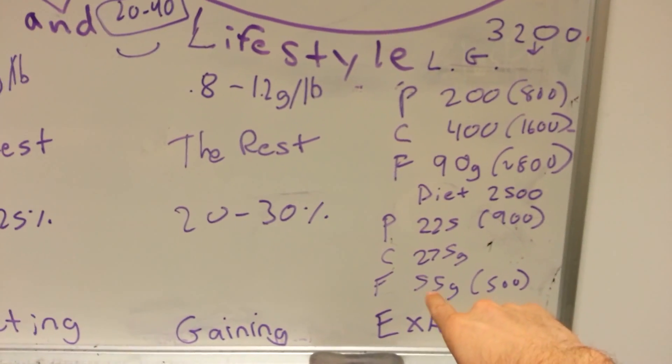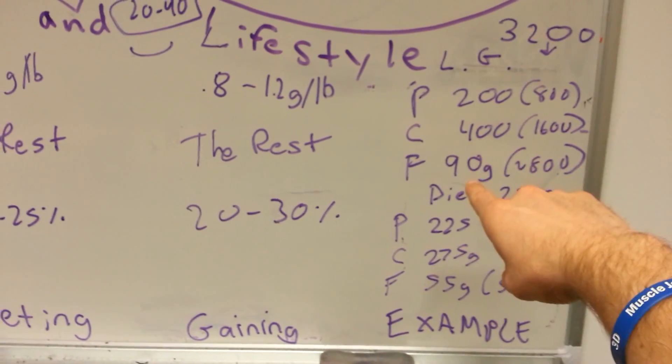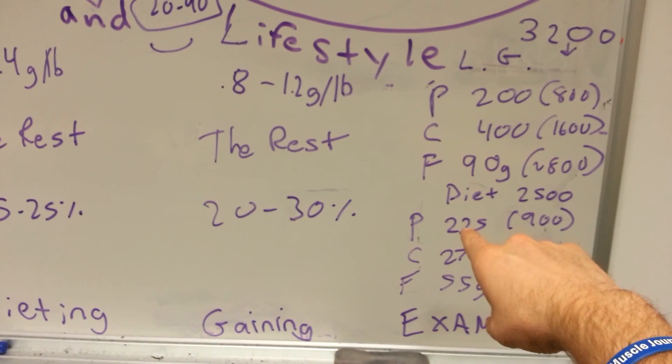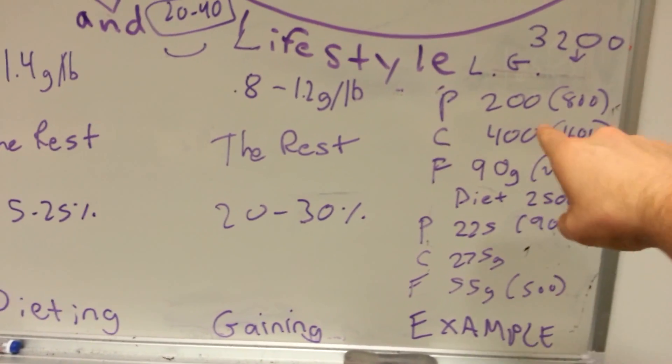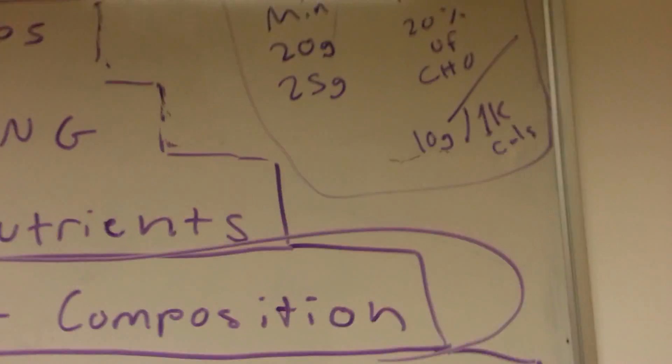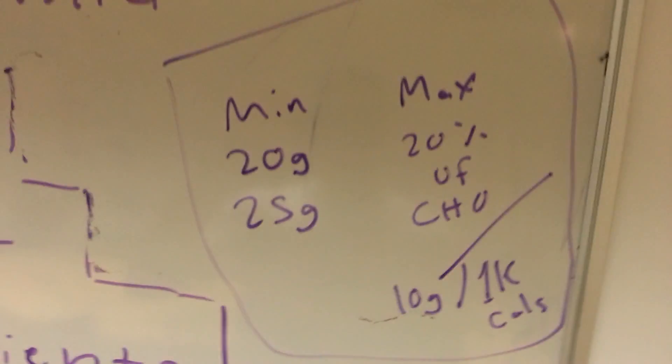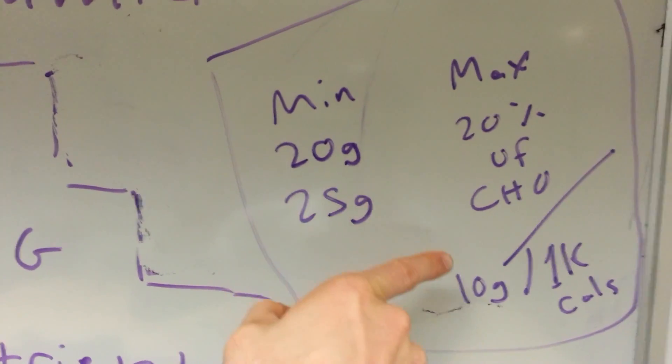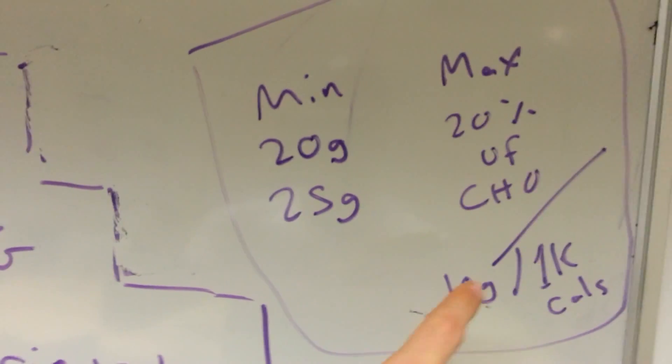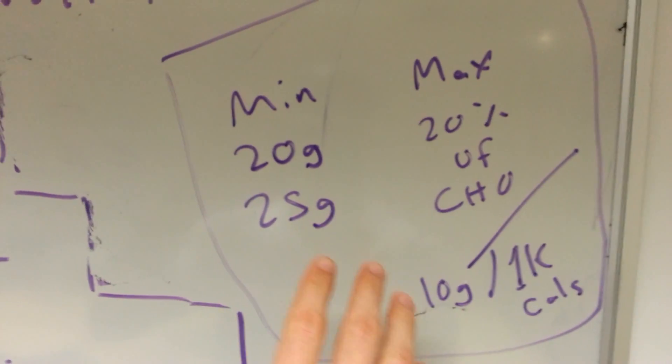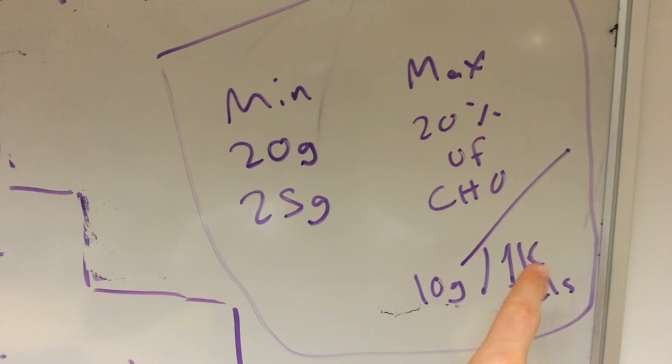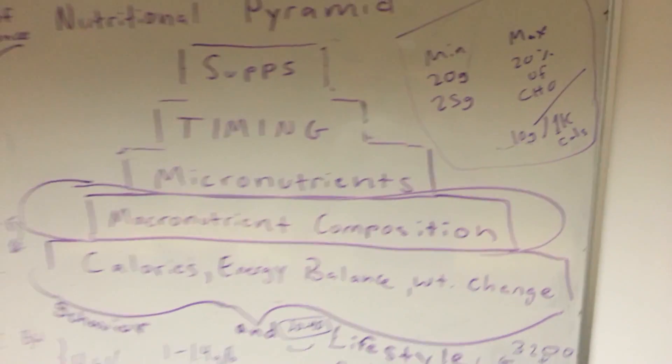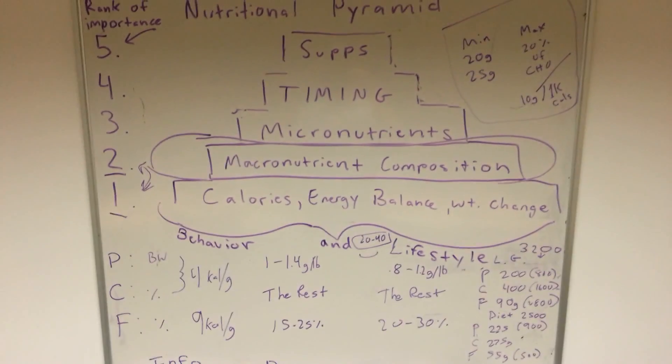So that is 20 percent, that is 25 percent, and then one gram per pound, 1.1 grams per pound-ish. The rest from carbs, the rest from carbs. And then we have our fiber recs: this is for ladies, this is for men. Max 20 percent of carbohydrates, and then if you're on keto or you have very low carbohydrates, 10 grams per 1,000 calories as a target. Alright guys, great work, and next week we will talk about micronutrients.